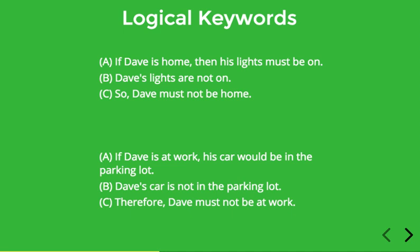Here's another example: if Dave is at work, his car would be in the parking lot. Dave's car is not in the parking lot, therefore Dave must not be at work. Here again I want to focus on the word 'therefore' in the final statement. This isn't really saying anything about Dave or the situation — it's a discourse connective which is just letting you know that 'Dave must not be at work' is a conclusion relative to the rest of the text.